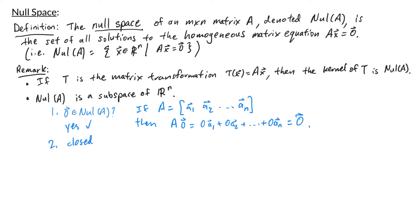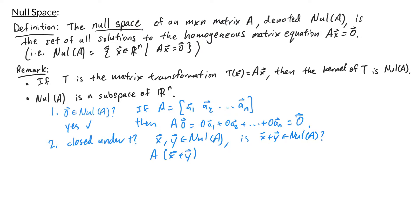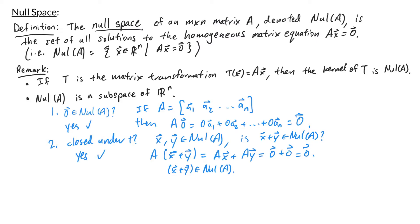Second, we want to check if the null space of A is closed under addition. Let x and y be two vectors in the null space of A. We want to ask: is x plus y in the null space? Well, A times (x plus y) distributes to give A times x plus A times y. Since x is in the null space, A times x is the zero vector, and since y is in the null space, A times y is the zero vector. So we have zero plus zero, which is the zero vector. Therefore x plus y is in the null space of A — the null space is closed under vector addition.